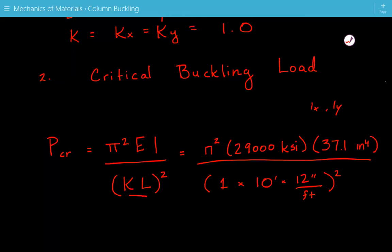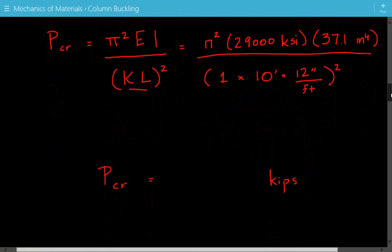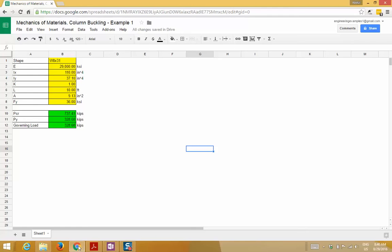Then we plug in for the effective length. The k is equal to 1 times the unbraced length 10 feet. We convert it into inches by multiplying by 12. The critical buckling load is equal to 737.41 kips.